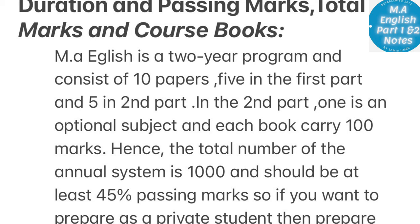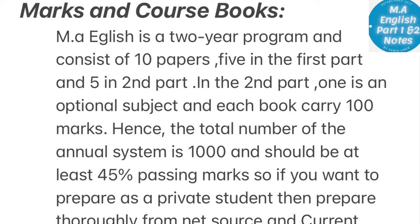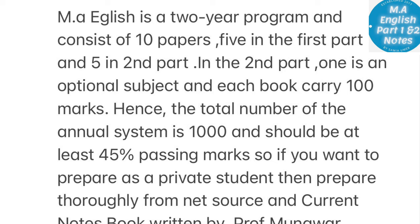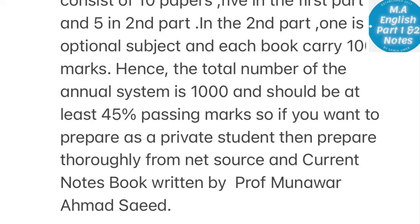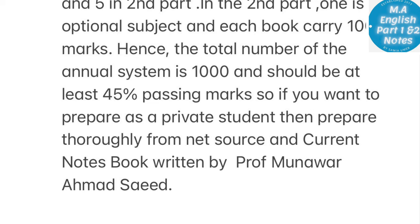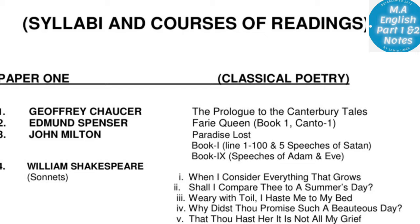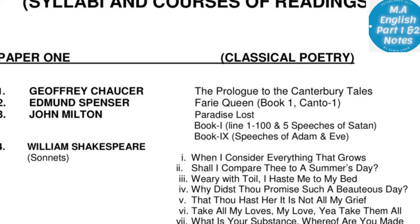MA English is a two-year program and consists of 10 papers — five in the first part and five in the second part. In the second part, one is an optional subject and each paper carries 100 marks, hence the total is 1000 marks. You should secure at least 45 percent marks. For preparation as a private student, prepare thoroughly from net sources and current notebooks written by Professor Monavar Ahmad Saith.